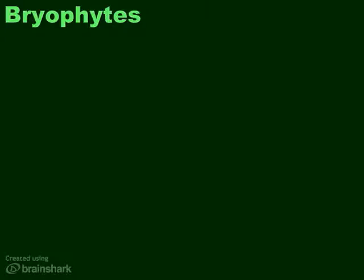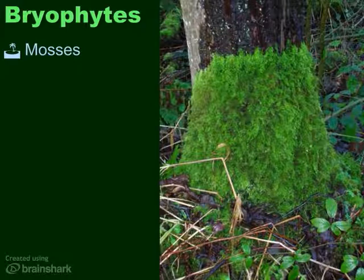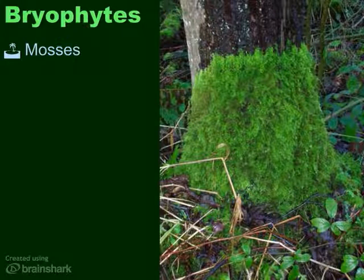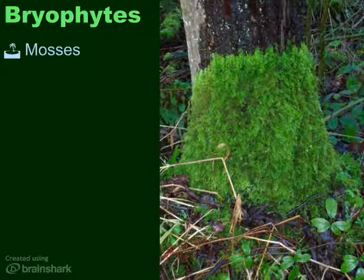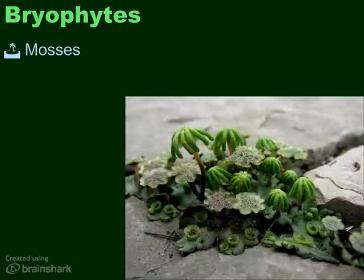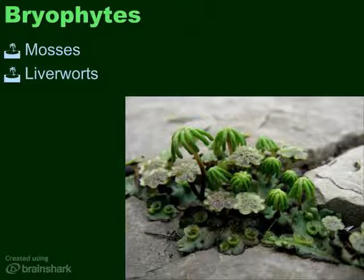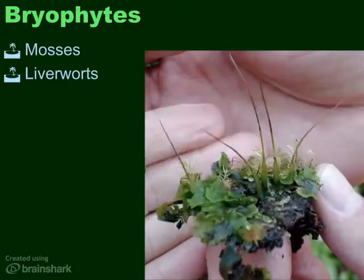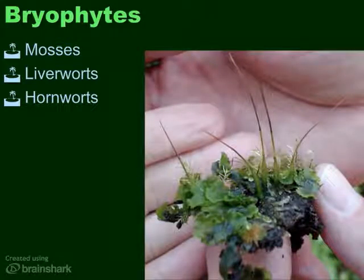There are three main types of bryophytes. First, the most common are the mosses. You find them on the ground, on the sides of trees, on rocks — just about any shady moist place. Sometimes there's lots of it and it feels much like carpet. Another type of bryophyte is the liverwort. These are less common and they have this unusual umbrella shape to their sporophyte stage. Lastly is a bryophyte called hornworts, so named because of the little horns that are the sporophyte stage.